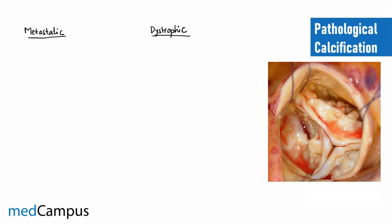Let us take an example of aortic stenosis. This is the post-mortem appearance of a patient who died of heart disease, and you can see calcific depositions. The gross appearance of calcific deposits is whitish and chalky — they may look like granules or clumps and clearly have a gritty nature. These are calcific deposits occurring in aortic stenosis.